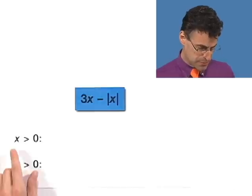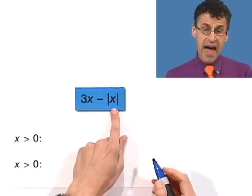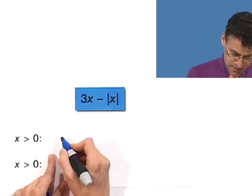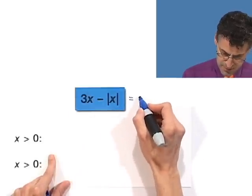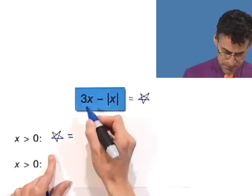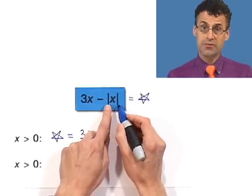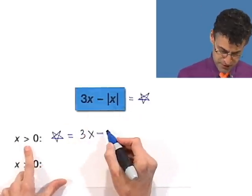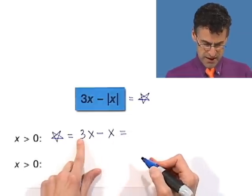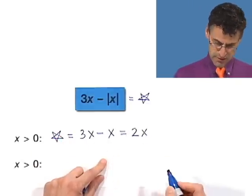Suppose that x is greater than or equal to 0. If x is greater than 0, then the absolute value of x is just itself. So let me call this quantity star. Then star equals 3x minus the absolute value of x, and if x is positive, that's just x. If I have three x's and I take one x away, how many x's do I have? Two x's. So star equals 2x in this case.